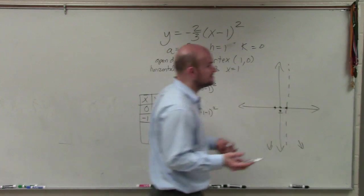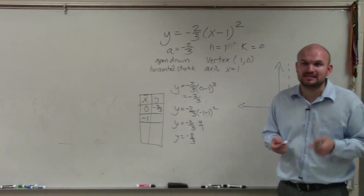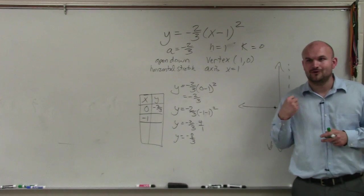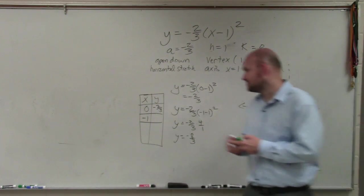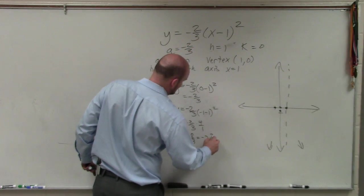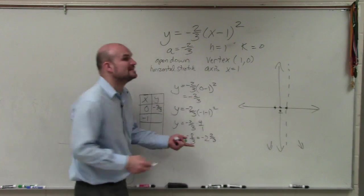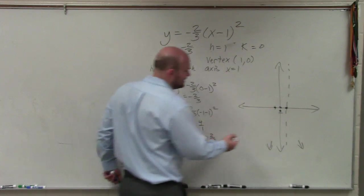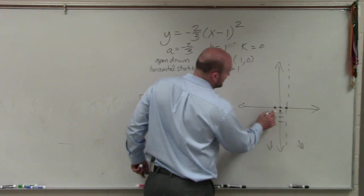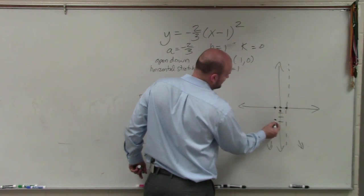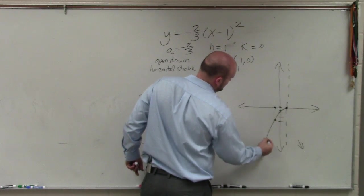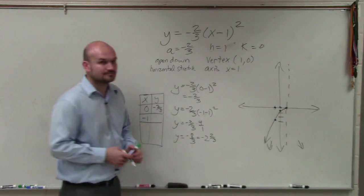And again, guys, fractions, it's OK. How many times is 3 going into -8? Two times with a remainder of 2. So you could say that is the same thing as -2 and 2/3, or -2.666 repeating. So I know that's going to be between 2 and 3. So I go over -1 and down like this, alright?